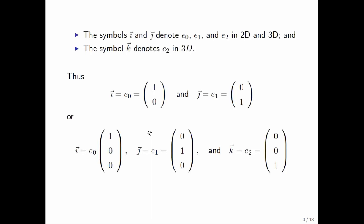So where have you seen this before? Well, if you took a course in physics, you may have seen the symbols i with an arrow above it, j with an arrow above it, and k with an arrow above it. These were pronounced as vec i, vec j, and vec k.